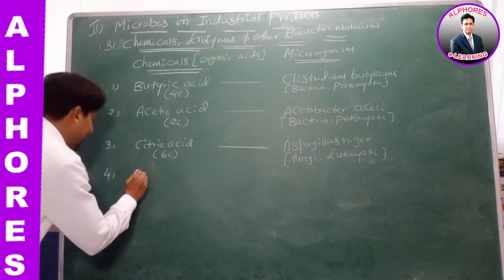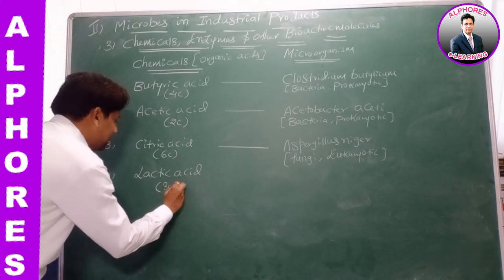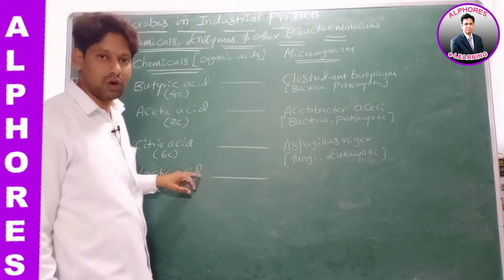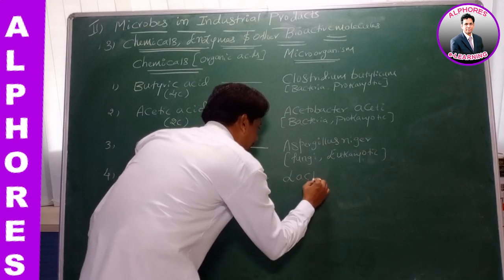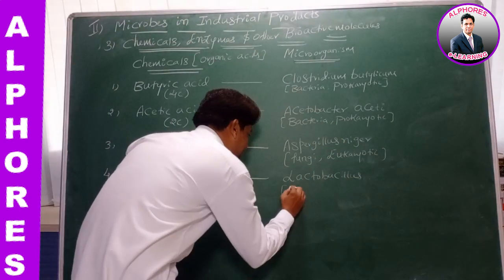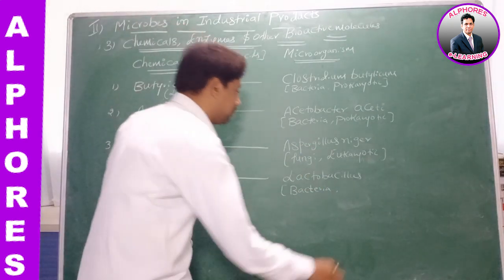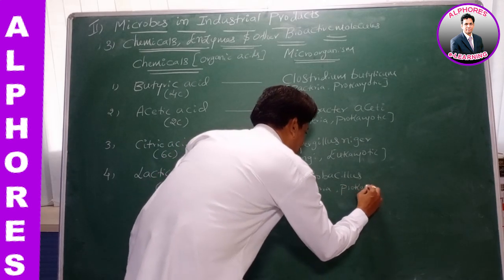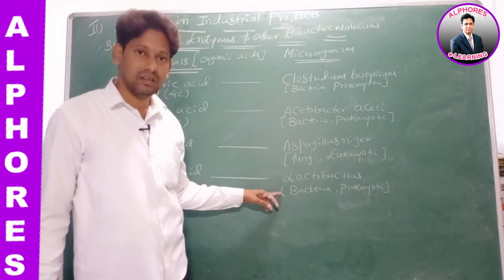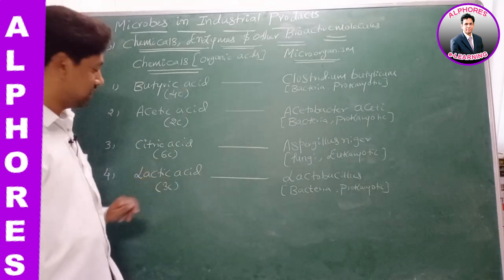Number four is lactic acid. Lactic acid has three carbons. To produce lactic acid industrially in large quantities, the microorganism exploited is Lactobacillus. Lactobacillus is a bacteria, so it is prokaryotic.